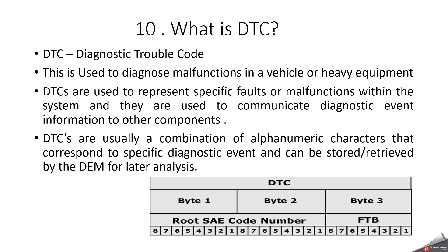What is DTC? DTC is a Diagnostic Trouble Code. Whenever you are configuring an event or reporting a fault, you have to report it with the DTC. Every fault has a DTC number and this can be calibratable as well. You can also create an event without a DTC number. This DTC is used to represent a specific fault or module functions within the system and is used to communicate diagnostic event information to other components. Most DTCs have three bytes of data: byte 1, byte 2, and byte 3.